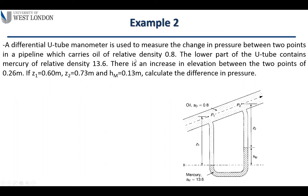Relative density is always divided by the density of water, assumed to be 1000 kg/m³, making the figures much smaller and dimensionless. The given values are: z1 = 0.6 m, z2 = 0.37 m, and h_m = 0.13 m, with an elevation difference of 0.26 m between the two measurement points.